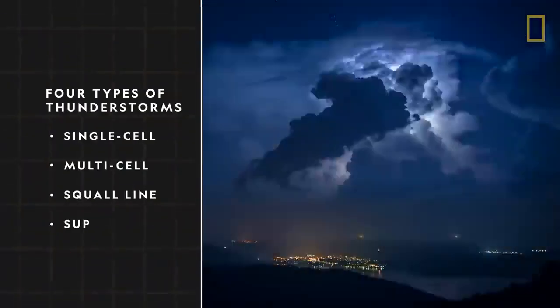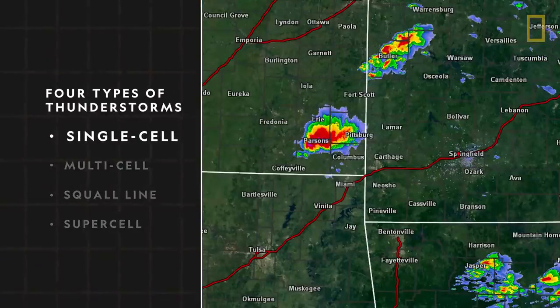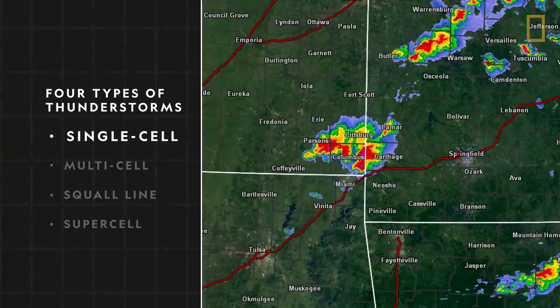There are four major types of thunderstorms. Single cell, which are small, weak, and isolated storms.